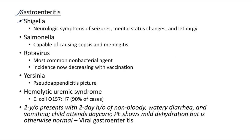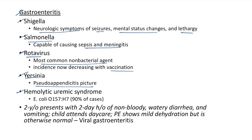Gastroenteritis: shigella causes neurologic symptoms (seizures, mental status changes, lethargy); salmonella causes sepsis and meningitis. Rotavirus is the most common non-bacterial agent causing gastroenteritis; its incidence is decreasing with vaccination. Yersinia gastroenteritis mimics appendicitis (pseudo-appendicitis picture). Hemolytic uremic syndrome is most commonly caused by E. coli O157:H7 (90% of cases). Clinical case: 2-year-old with 2-day history of non-bloody, watery diarrhea and vomiting; attends daycare; mild dehydration on examination.